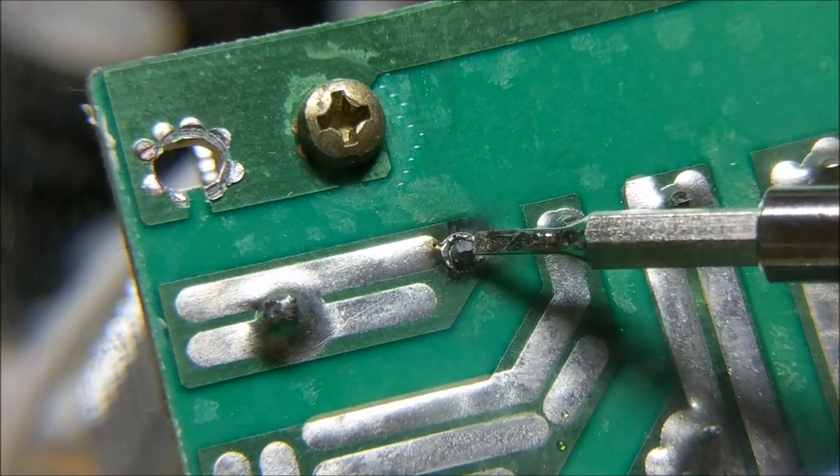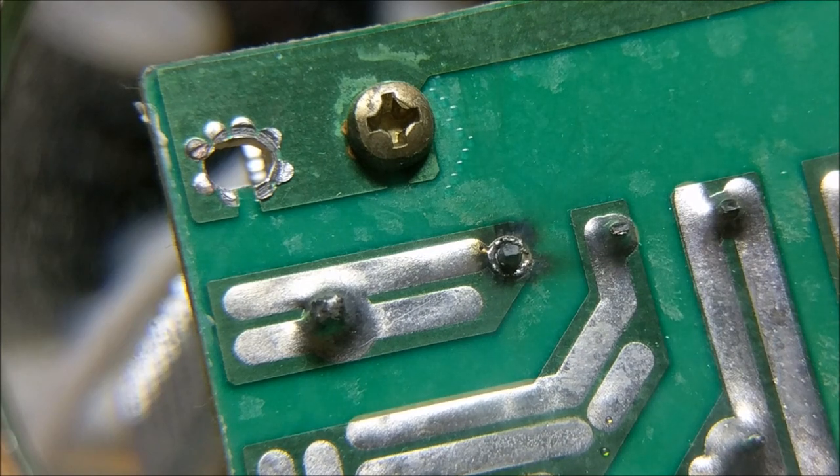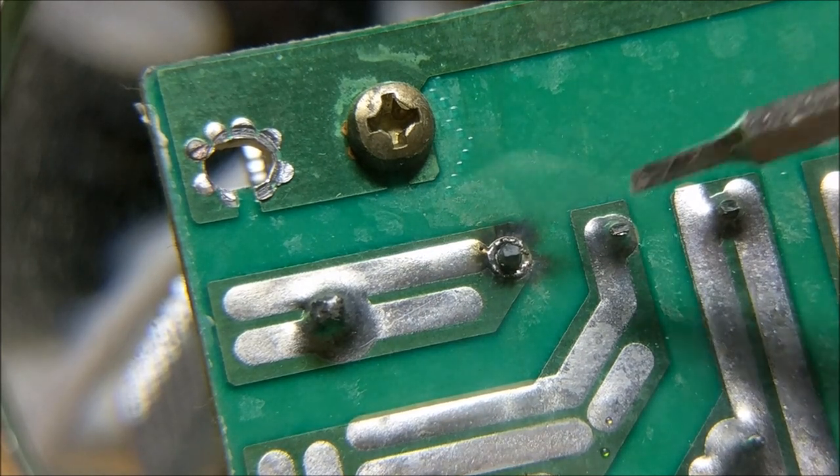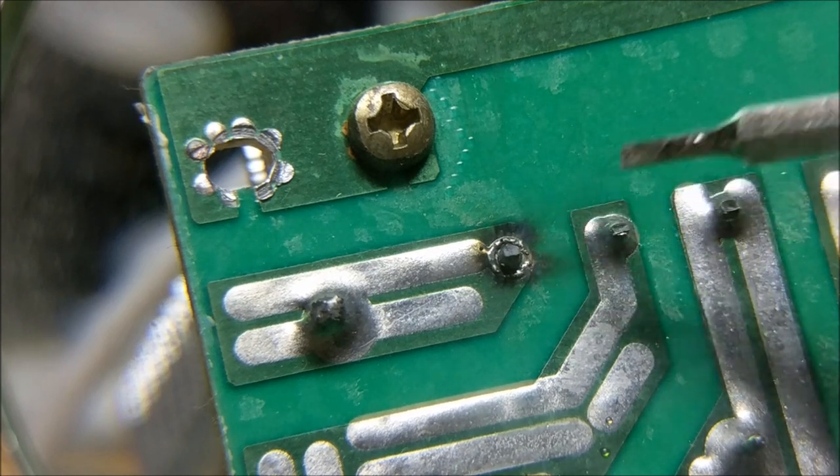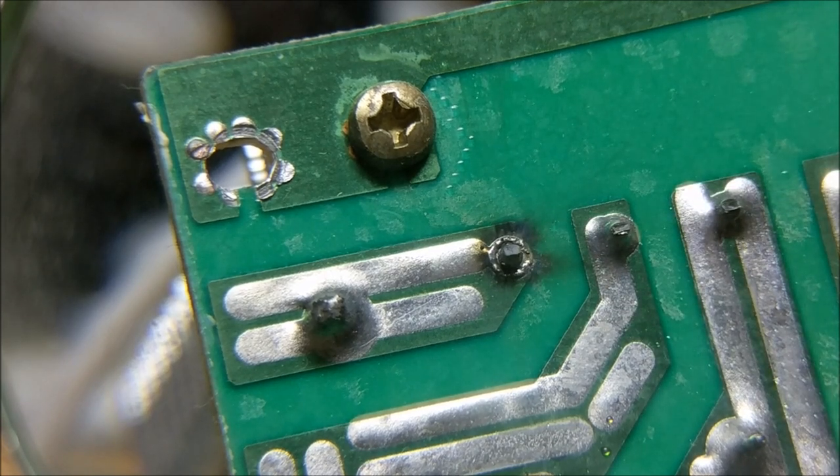It's this solder joint right here. This solder joint goes to the negative pole of the bridge rectifier on the other side of the board. As you can see,